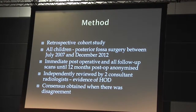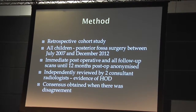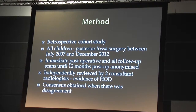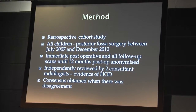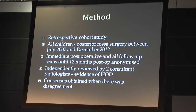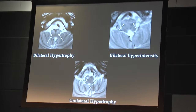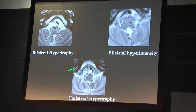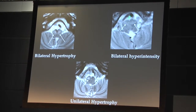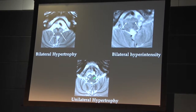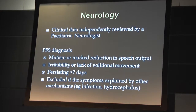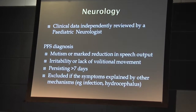We looked at children who had posterior fossa syndrome surgery between July 2007 and December 2012. All immediate post-operative scans and follow-up scans for the next 12 months were anonymized and reviewed by two consultant radiologists familiar with neuroimaging, with consensus obtained on disagreements. We looked for bilateral hypertrophy of the olives, slight increased signal without hypertrophy, and unilateral hypertrophy. The neurology was assessed independently by a pediatric neurologist.